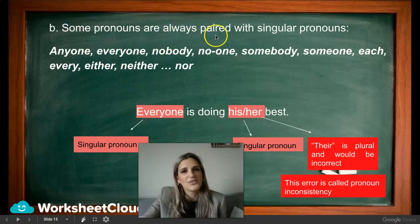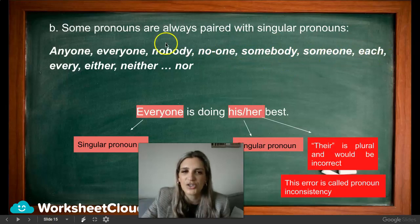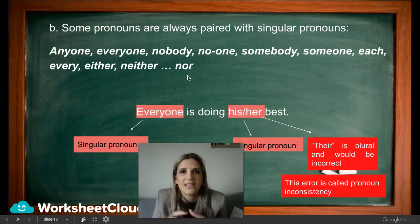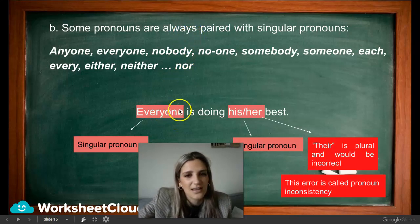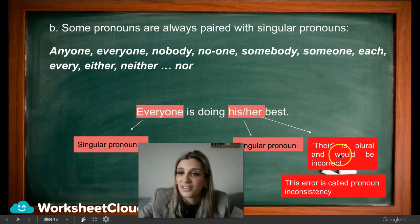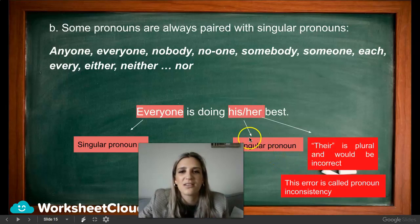Some pronouns are always paired with singular pronouns. Whenever you see: one, body, each, every, either, neither, nor — these are singular. My learners say 'every one — it's many,' but the concept is: one is singular, body is singular. 'Everyone is doing his or her best' — we're not going to say 'their best' because that is plural and would be incorrect. We need to use his or her — singular pronouns. This error is called pronoun inconsistency.